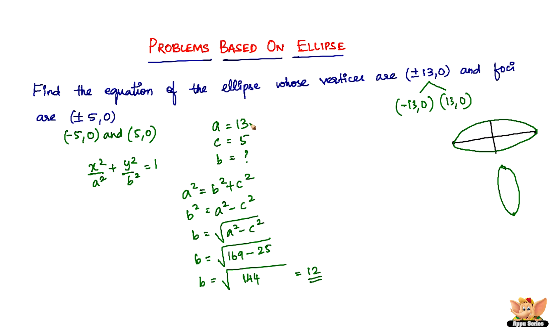Now that we found b and already know a, we can straight away substitute the values of a and b in this equation and we have the equation of the ellipse whose vertices are (-13,0) and (13,0) and foci are (5,0) and (-5,0).